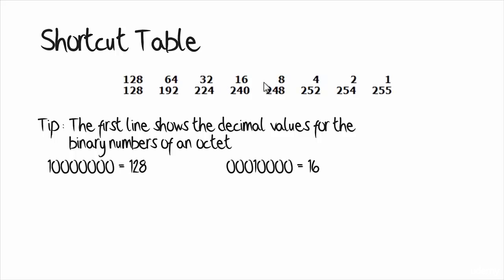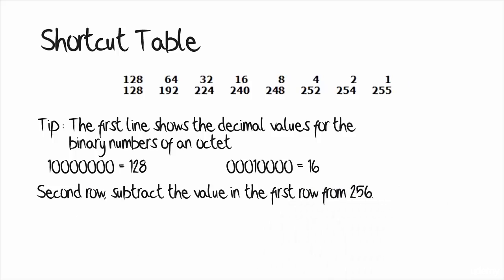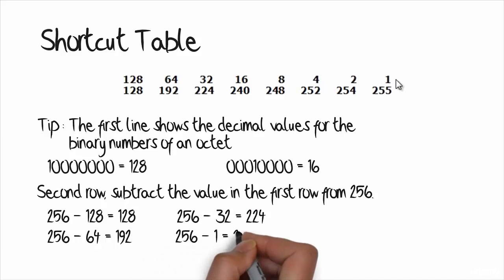So remember the top row: 128, 64, 32, 16, 8, 4, 2, and 1. The IP addressing section of this course explains those values in detail. To work out the second row of the table, take 256 minus the top value. So 256 minus 128 gives 128, 256 minus 64 gives 192, 256 minus 32 gives 224, and 256 minus 1 gives 255. You only need to memorize the top values; the second row follows simply. Many people memorize the entire table for speed.